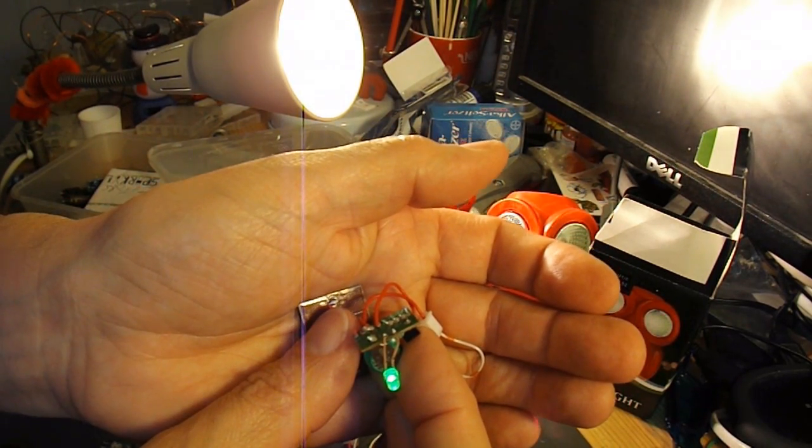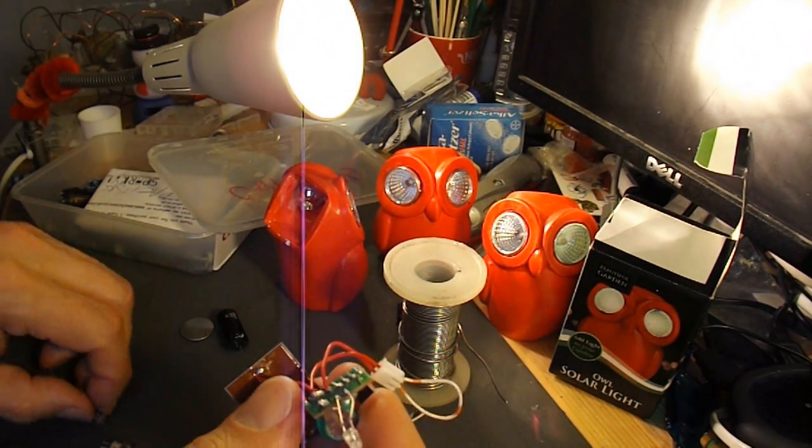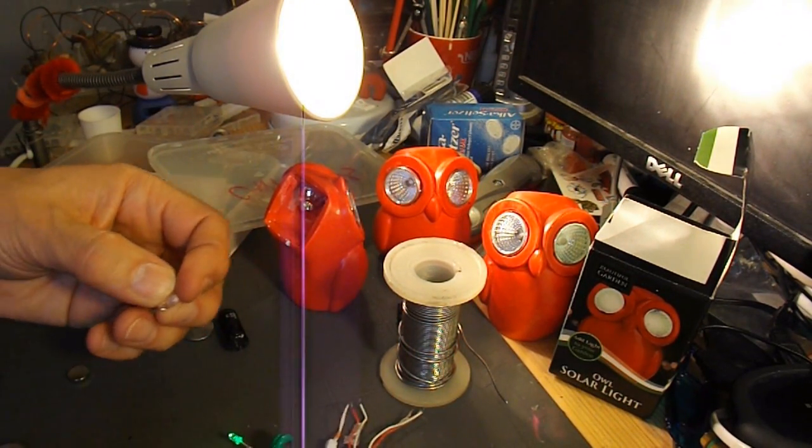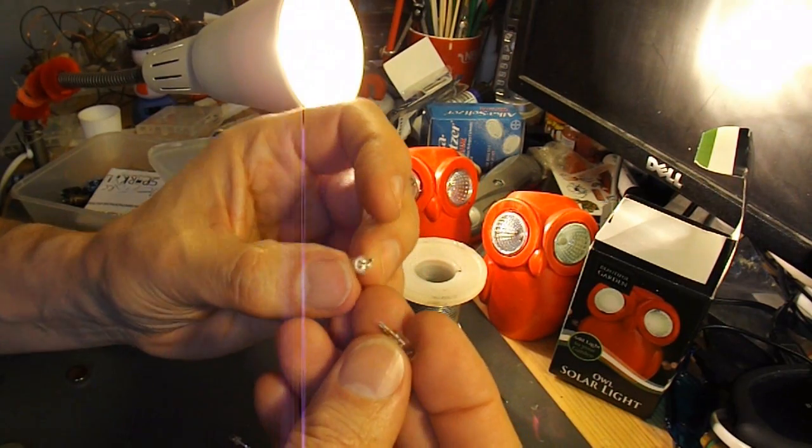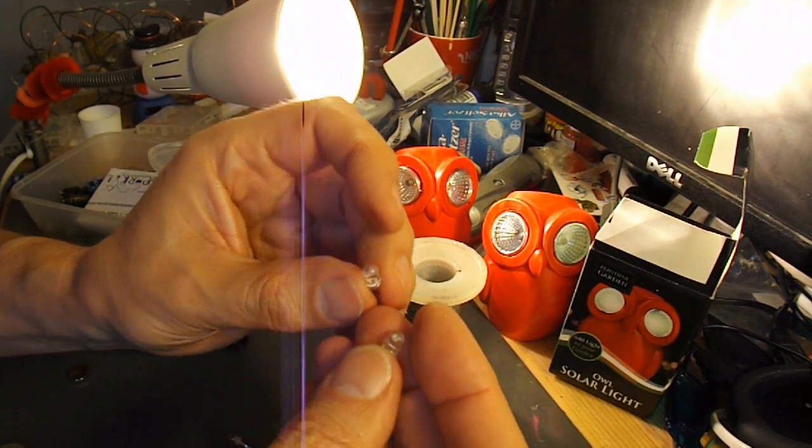So, that was the problem. Duff LEDs. Very unexpected. I really can't remember the last time I've had some faulty LEDs on a solar light.